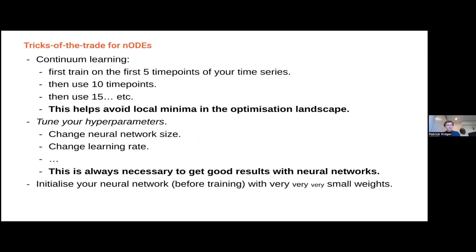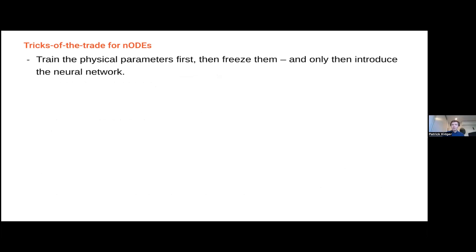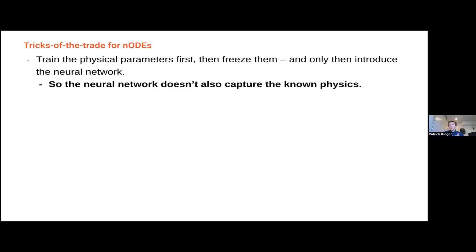Initialize the neural network before training with very, very small weights. What I'm saying is: start the learned correction — the neural network — near zero. We have some pretty good theoretical model as starting point. I want my correction to learn some small perturbation to that, so typically I'll have it start near zero — so I don't immediately end up in some weird part of the model space that doesn't overlap my data. Also, I implicitly trained my physical models first and then only trained the neural network. This is a very common workflow: train the physical parts first; have the physical parts capture as much of the physics as they can; don't let the neural network capture any of the known physics — let it stick to just the unknown physics.